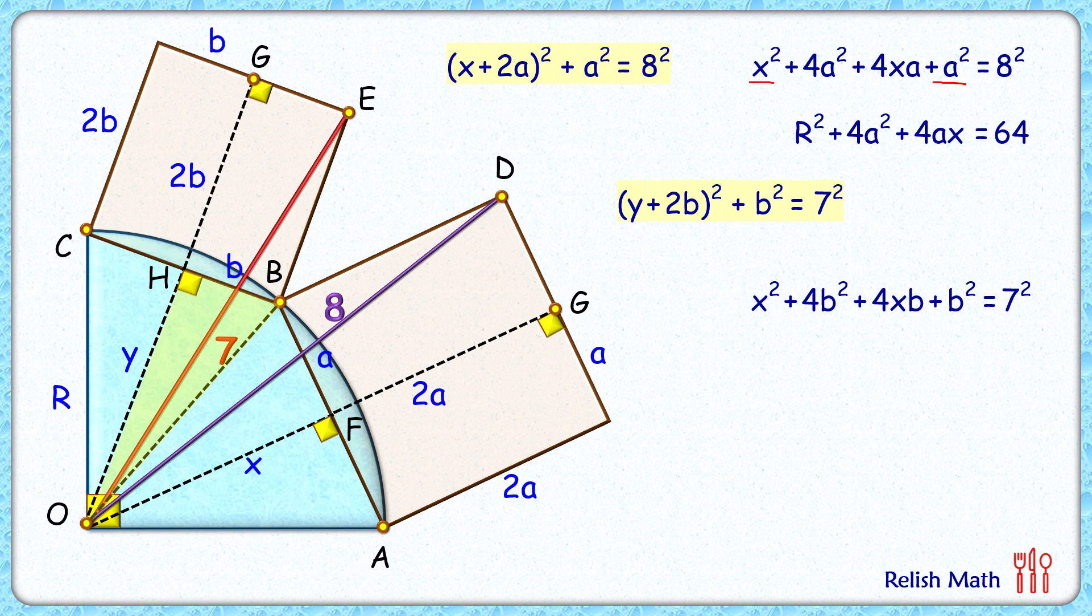And again OB is nothing but the radius of the circle, so replacing y² + b² by r² we'll get equation in this form. So we have got two equations here, equation 1 and equation 2. Let's add these two equations to get a new equation.